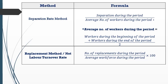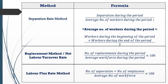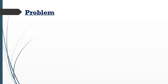The replacement method uses the number of workers replaced by the organization to fill up vacancies, divided by the average workforce during the period, multiplied by 100. The labor flux rate method is a combination of the separation method and the replacement method: number of separations plus number of new employees recruited, divided by the average number of workforce, multiplied by 100. Now let us solve problems using all three methods.